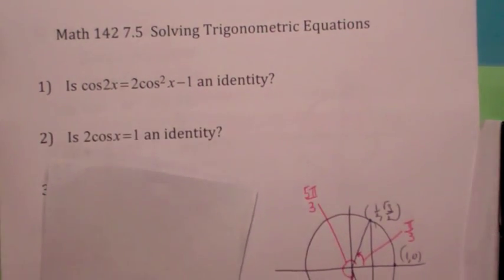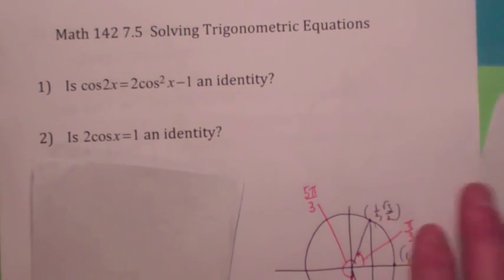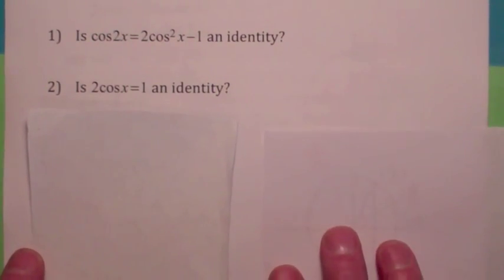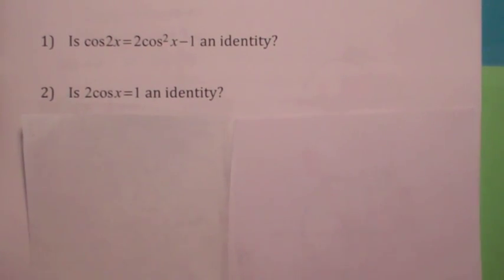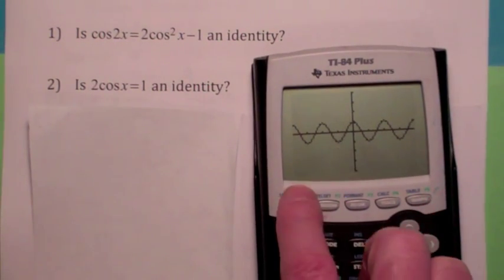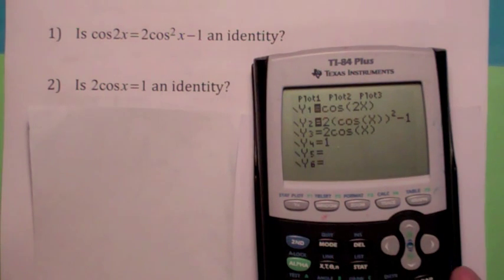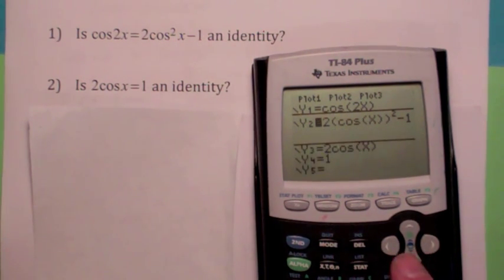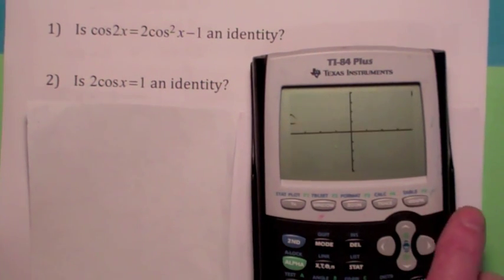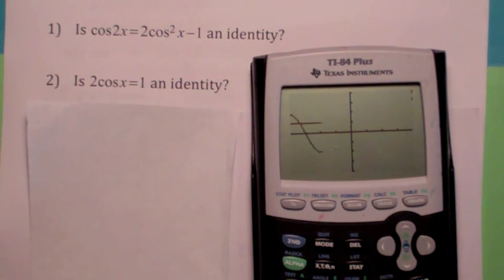How about the second one — is 2 cosine x equals 1 an identity? Is the equation true for all x? If you disengage the first two and engage the second two, you have the left side and the right side of the equation. When you graph this, you should get the same graph, but notice you don't — you get different graphs, so therefore it's not an identity.